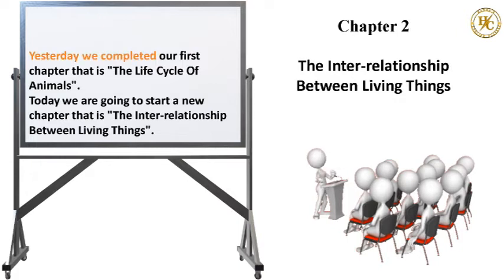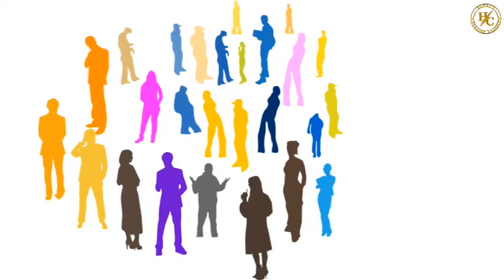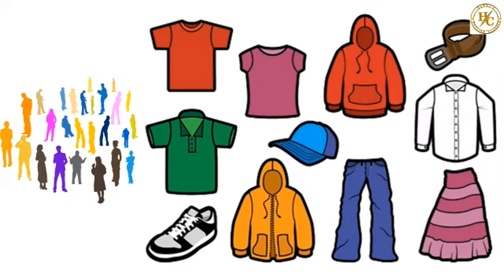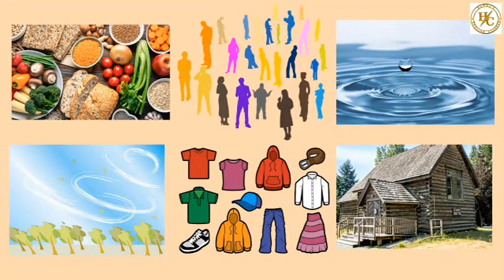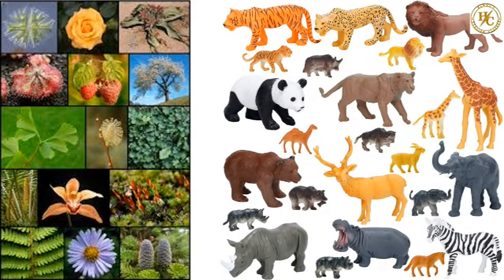Yesterday we completed our first chapter — the life cycle of animals. Today we are going to start a new chapter: the interrelationship between living things. All human beings have many needs like food, water, air, clothes, and shelter. All these needs are met in our surroundings. We need plants and animals to satisfy many of our needs.